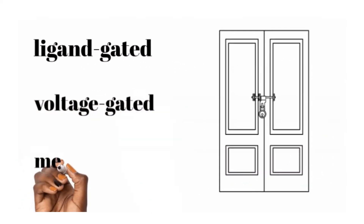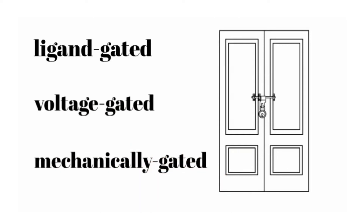There are three types of gated channels we're going to talk about: ligand-gated channels, voltage-gated channels, and mechanically gated channels. Ligand-gated channels open when some sort of signaling molecule or chemical binds to the gate. A voltage-gated channel opens due to a change in voltage of the cell. A mechanically gated channel opens when there's some sort of physical force that pushes or pulls that gate open.